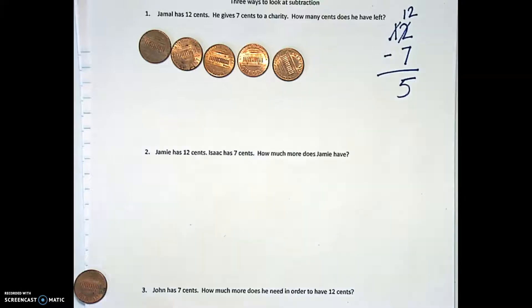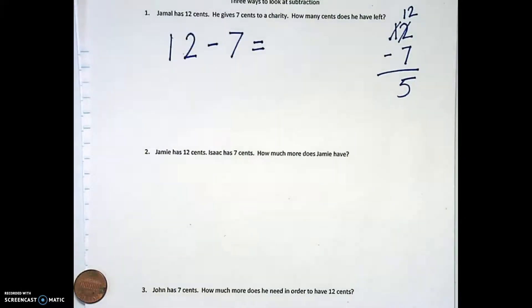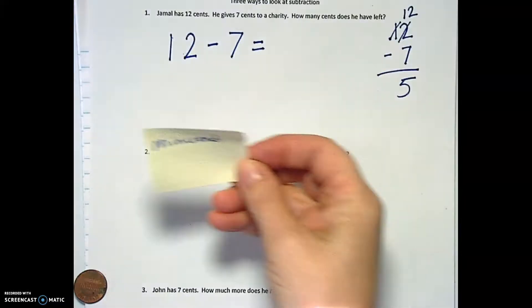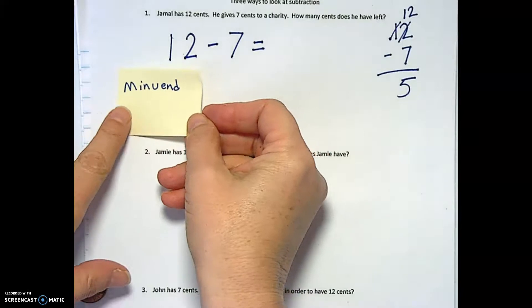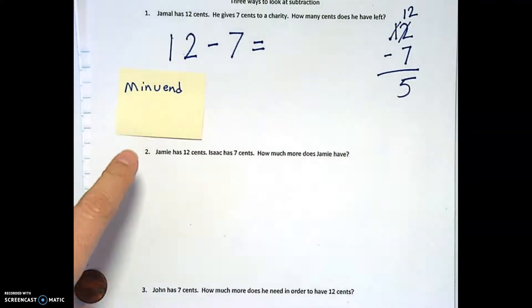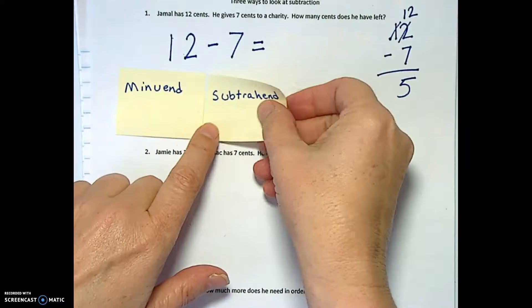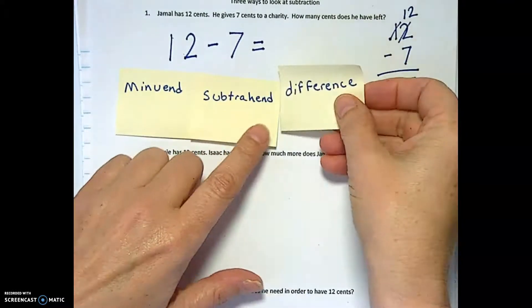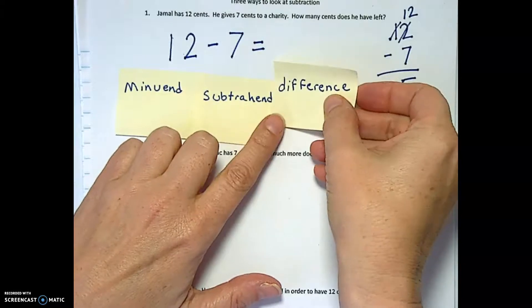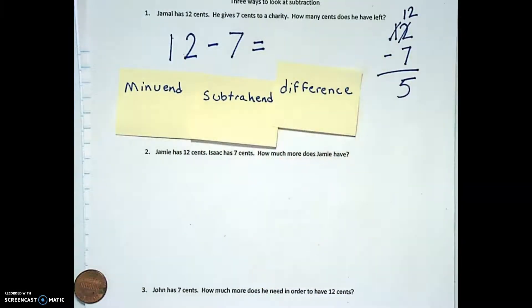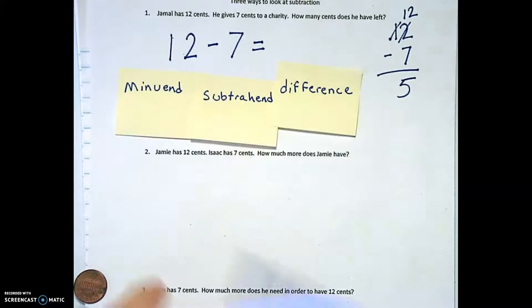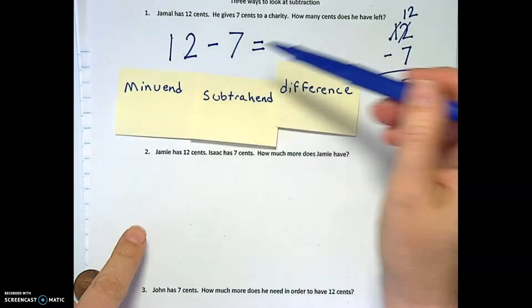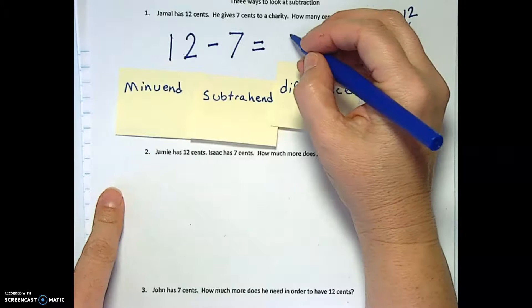This problem I'm going to write out a slightly different way in order to talk about some vocabulary that we don't usually talk about. This thing that we start a subtraction problem with is the minuend. This is the subtrahend. The thing that we're subtracting is that. And then our answer is the difference. So a little bit of vocabulary to help you out here. Minuend minus subtrahend equals difference. 12 minus 7 gave us a 5.